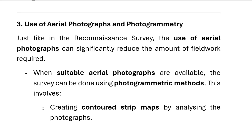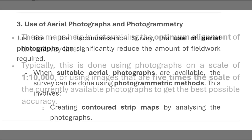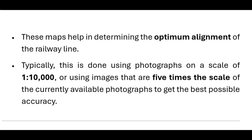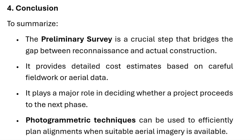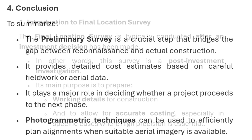Photogrammetric methods involve creating contoured strip maps by analysing the photographs. These maps help in determining the optimum alignment of the railway line. Typically, this is done using photographs on a scale of 1:10,000, or using images that are 5 times the scale of the currently available photographs to get the best possible accuracy. To summarize, the preliminary survey is a crucial step that bridges the gap between reconnaissance and actual construction. It provides detailed cost estimates based on careful fieldwork or aerial data, plays a major role in deciding whether a project proceeds to the next phase, and photogrammetric techniques can be used to efficiently plan alignments when suitable aerial imagery is available.